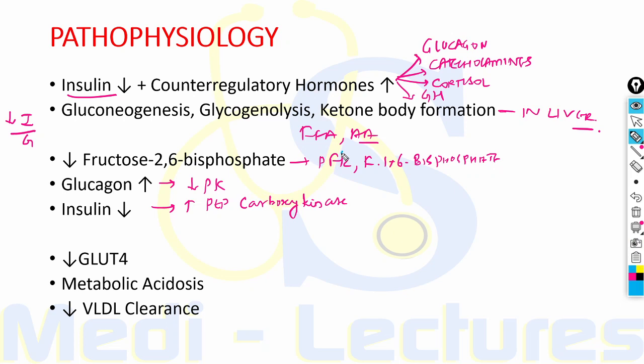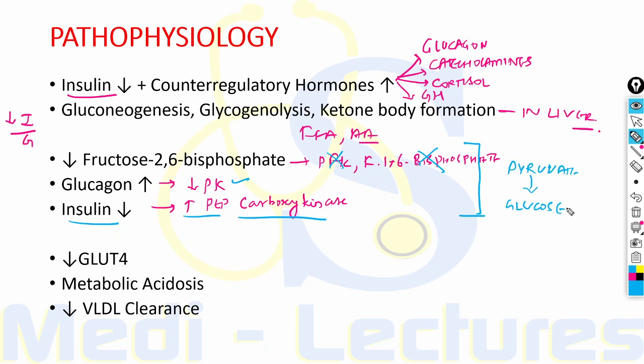Due to insulin deficiency and hyperglycemia, there is decrease in fructose-2,6-bisphosphate levels, which alters the activity of phosphofructokinase and fructose-1,6-bisphosphatase. Due to glucagon excess, there is decreased activity of pyruvate kinase, and due to insulin deficiency, there is increased activity of phosphoenolpyruvate carboxykinase. All these changes shift pyruvate metabolism towards glucose synthesis, so pyruvate which was normally involved in glycolysis is now shifted toward glucose synthesis.